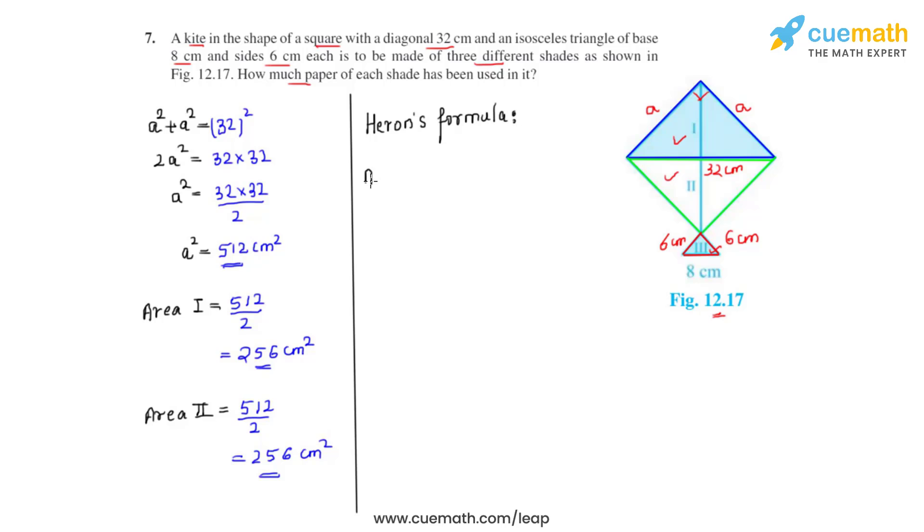Heron's formula says area A for any given triangle equals √(s × (s-a) × (s-b) × (s-c)), where s is the semi-perimeter, while a, b, c are the three side lengths of a given triangle. So we will have to find the semi-perimeter first.